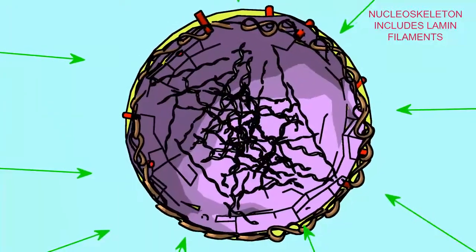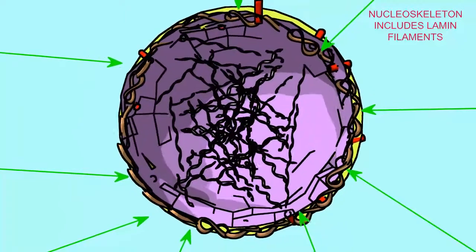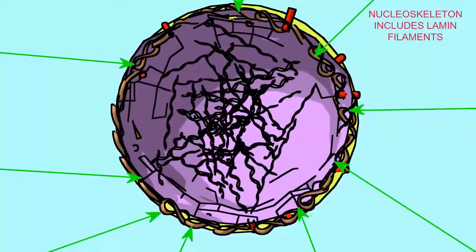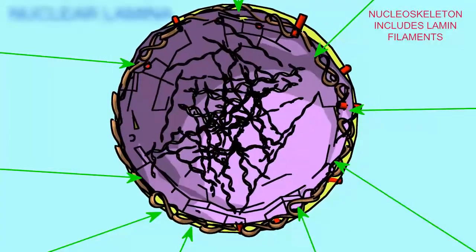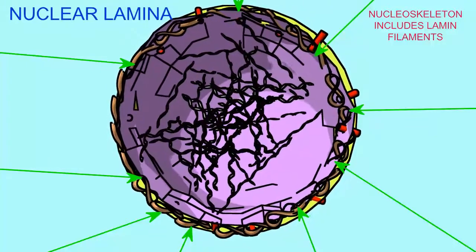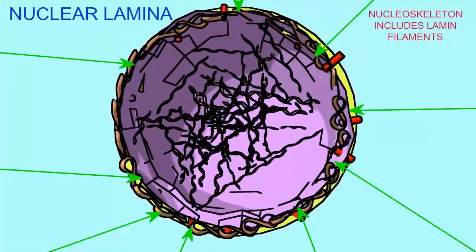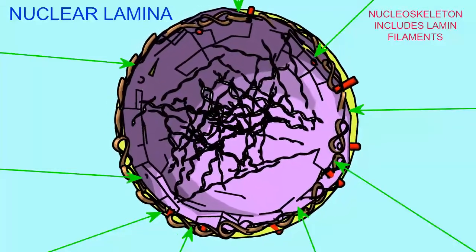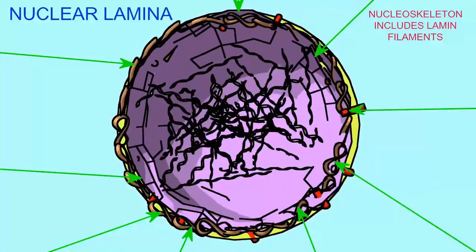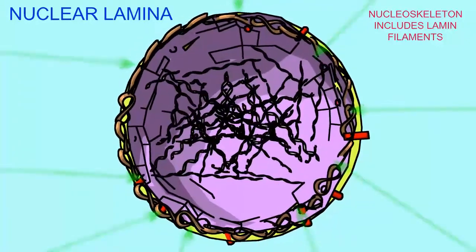These proteins have been modified to allow them to localize to the inner nuclear membrane and self-assemble there to form a network of fibers just deep to the inner nuclear membrane, known as the nuclear lamina.